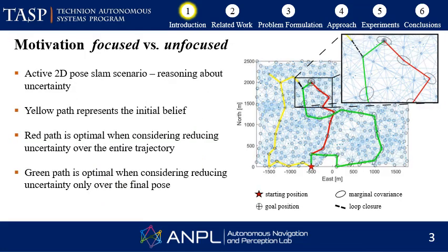To motivate you that the focused and unfocused problems can have two very different optimal solutions, even when considering the same set of candidate actions, we observe this active 2D pole SLAM scenario where the robot has to navigate to a goal position. We use black ellipses to denote the marginal covariance at each step and black dashed lines to denote loop closures. The red path is optimal when we consider reducing uncertainty over the entire trajectory, which is probably expected as it was the shortest one. When we consider reducing uncertainty only over the final position, the green path is optimal even though it is very long — the marginal covariance shrinks just before it reaches the goal, thanks to a big loop closure.